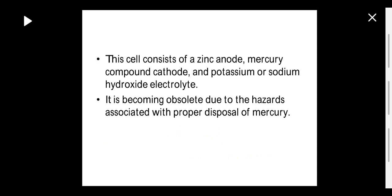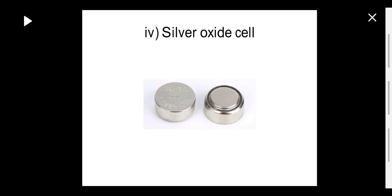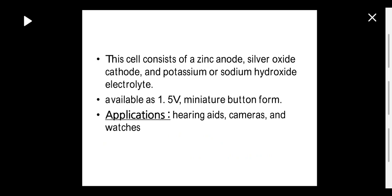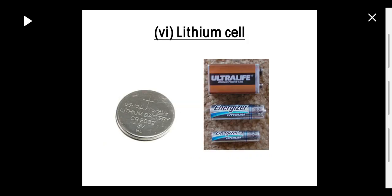The next type is the silver oxide cell. This cell consists of a zinc anode, silver oxide cathode, and potassium or sodium hydroxide electrolyte. These are available as 1.5 volt miniature button-form cells. Applications include hearing aids, cameras, and watches — in these equipments we use this kind of battery.